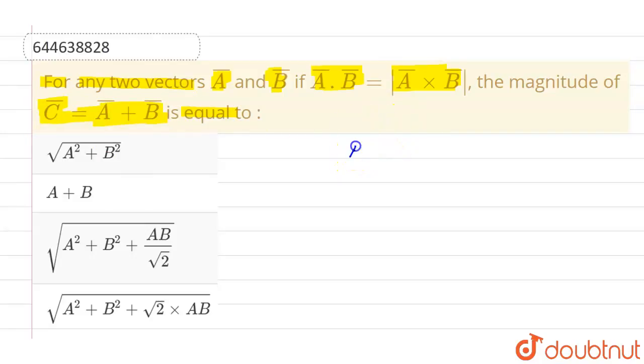So we know that we are given A vector dot B vector equals magnitude of A vector cross B vector. Now we know that A vector dot B vector is magnitude of A vector, magnitude of B vector into cos theta.